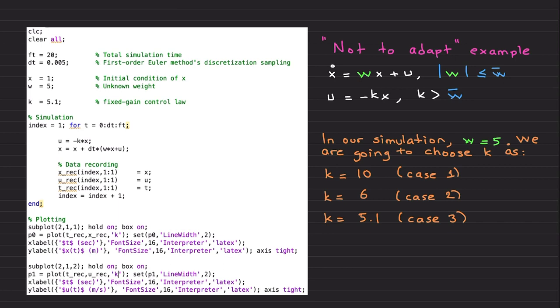Simulation time is 20 seconds. I am using a discretization—each discretization is 0.005 seconds using first-order Euler's method sampling. Initial condition for x I choose to be 1, unknown weight w I'm choosing to be 5. I'm going to consider three cases: case 1 I choose k to be 10, case 2 k=6, and case 3 k=5.1.